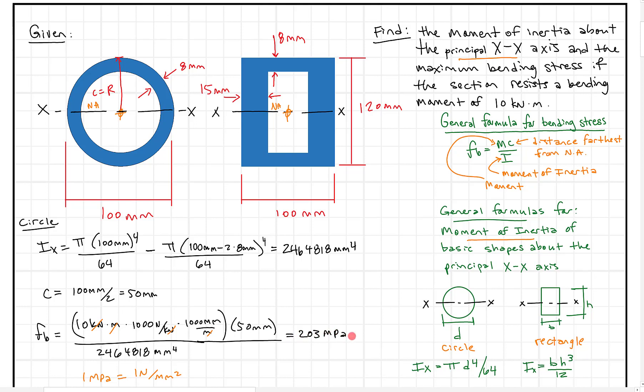So all we had to do was plug into the formula for the circle, find C, substitute in, make sure the conversions are correct, and we end up with 203 megapascals. Next, I'll clear this out and do the same thing for the rectangle.